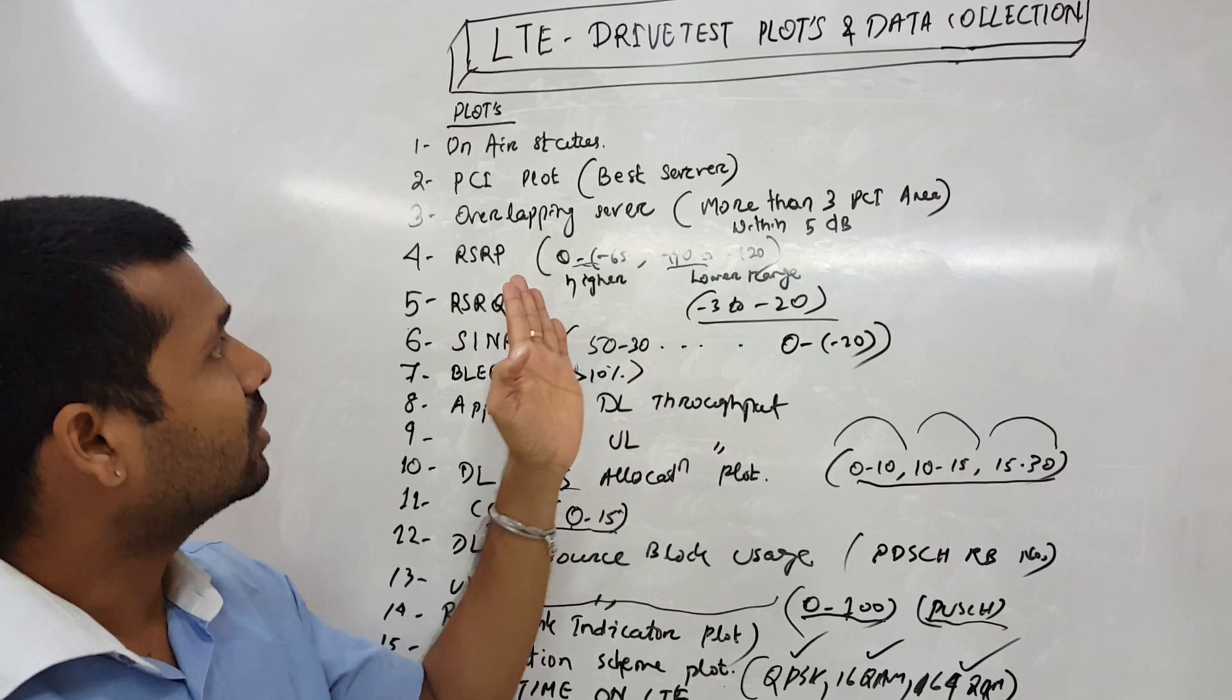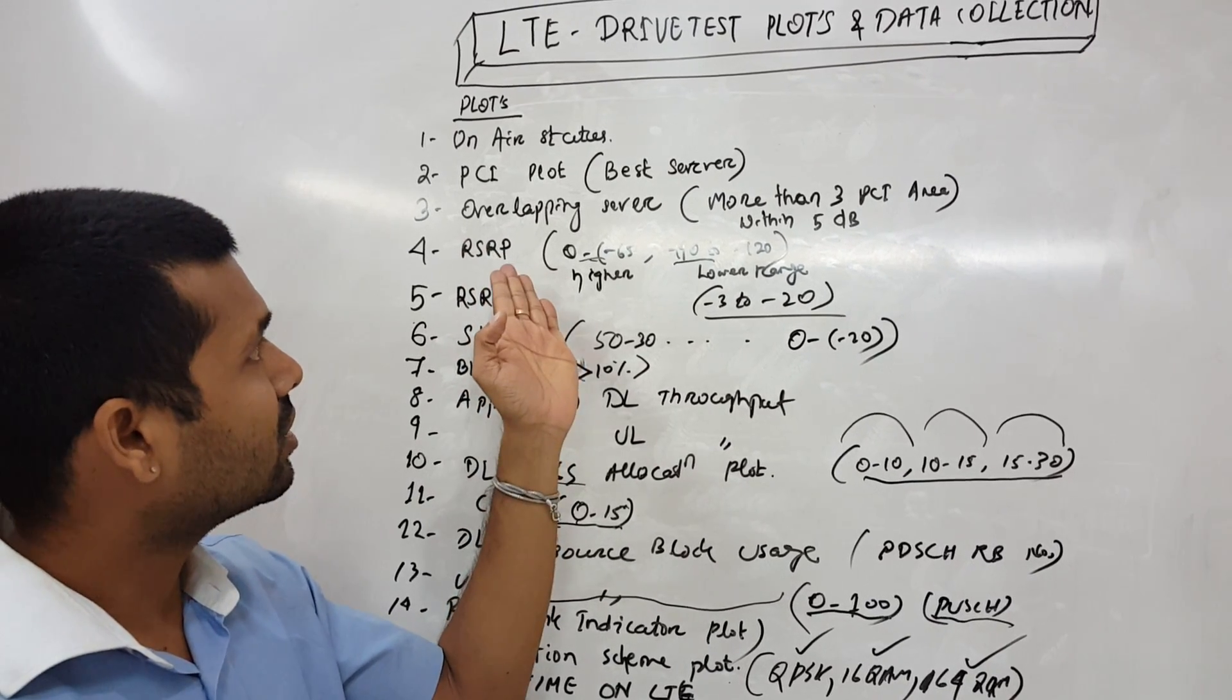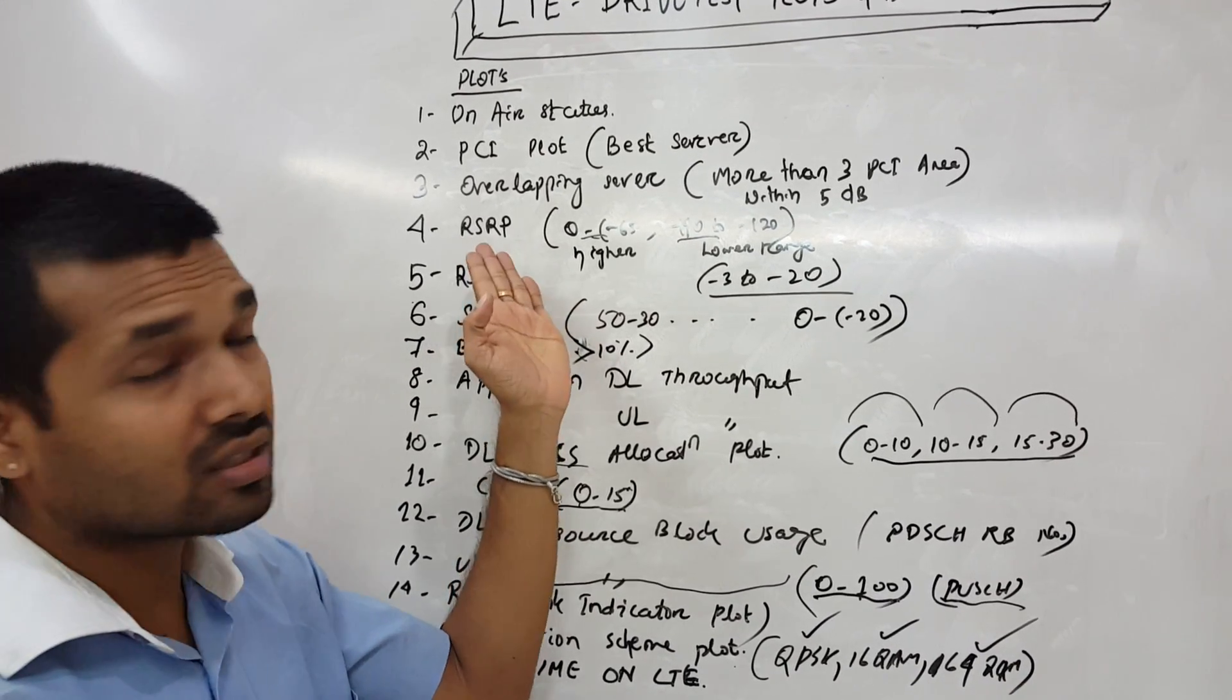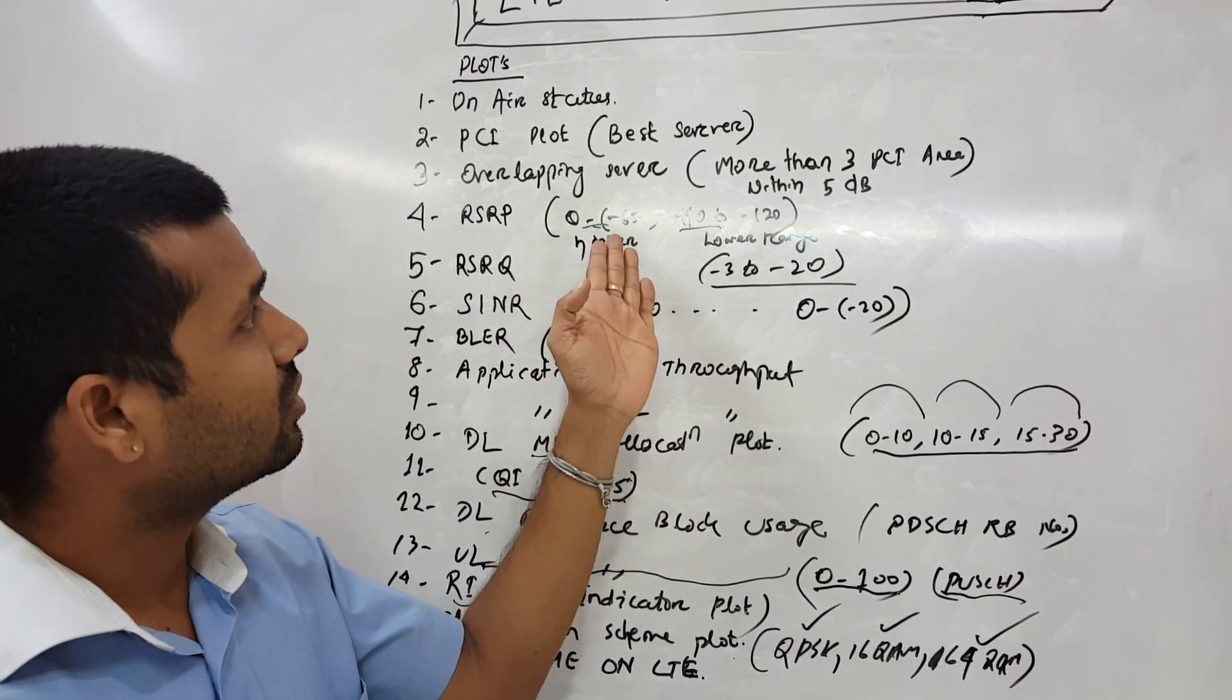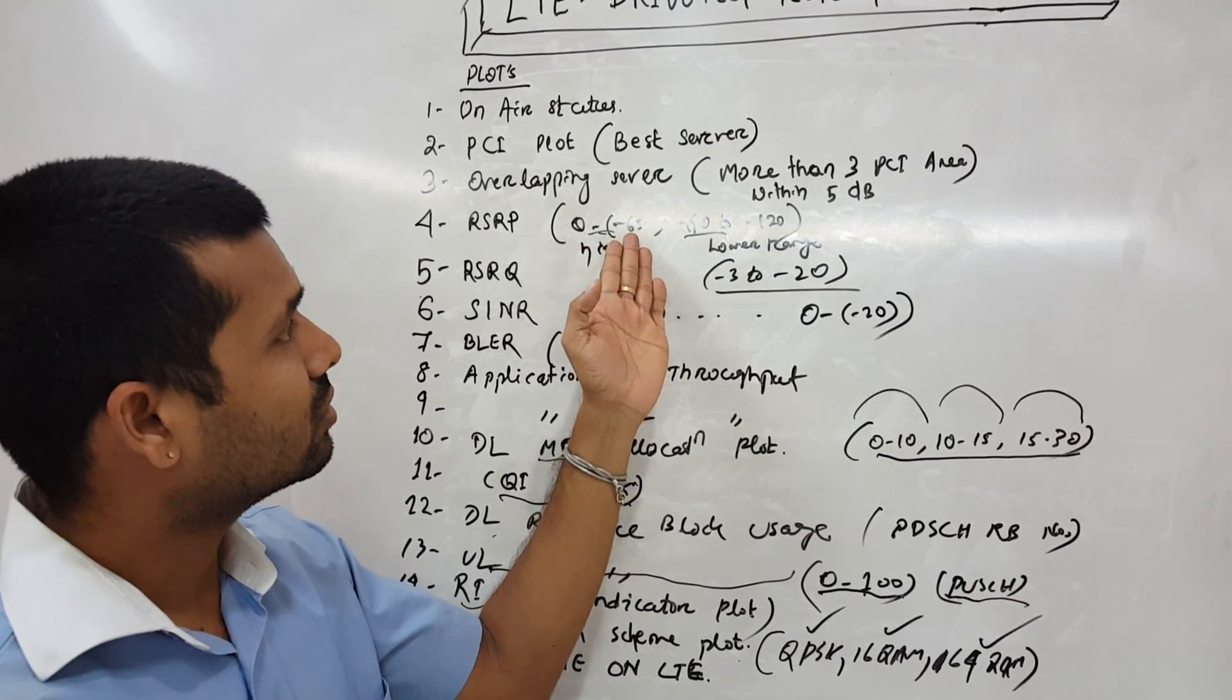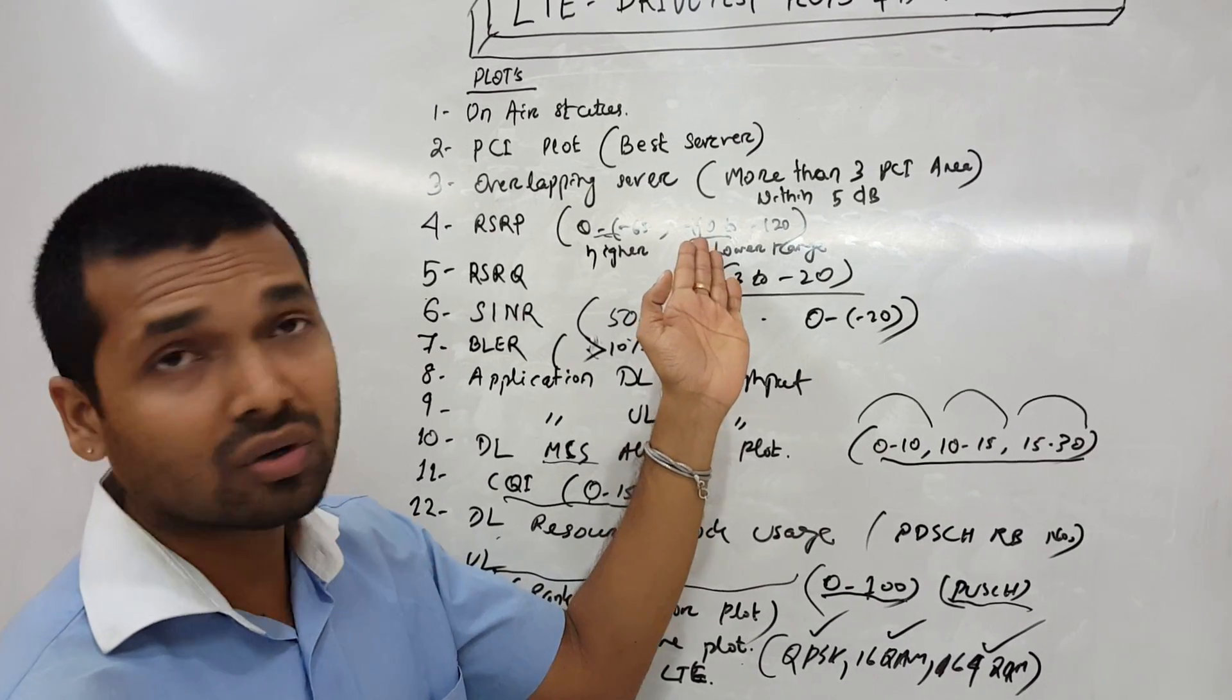Then we have RSRP - received signal received power. The best value would be 0 to minus 65 and the worst value we can collect up to minus 140 dBm samples.